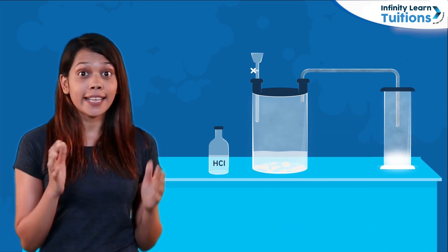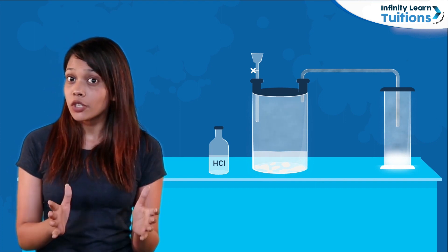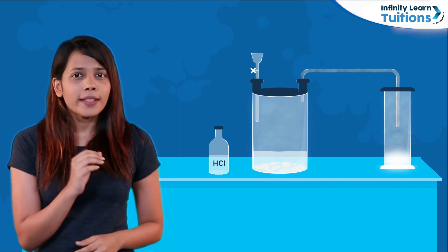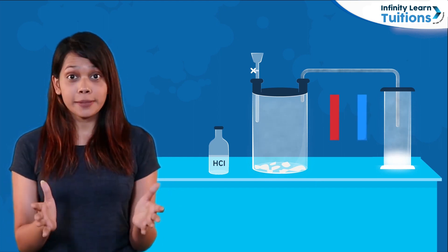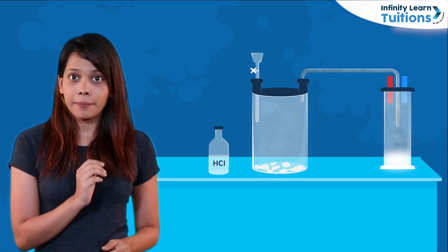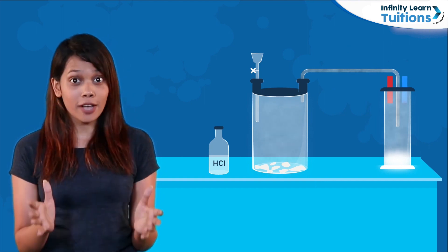Now that we are done collecting the gas, let us check the nature of it, whether it is acidic, basic, or neutral. We will take the red and blue litmus paper, moisten them, and hold them over the gas jar.